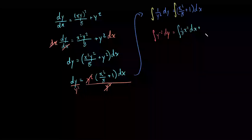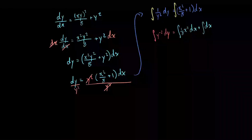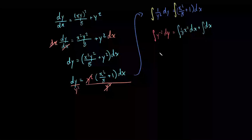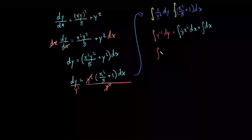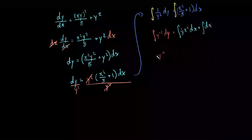So all I did was separate this into two separate integrals. For the left-hand side integration, we're going to add 1 to the power and divide by the new power. This is going to be y to the negative 1 divided by the new power, which is negative 1. We're going to write y to the negative 1 divided by negative 1, plus c.